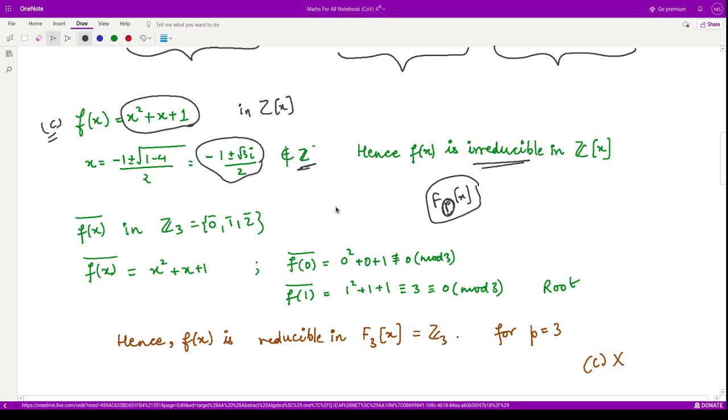So I have chosen this p to be 3. So you see that our F_p becomes Z_3, and it only has three elements: 0, 1, and 2, which are the equivalence classes.